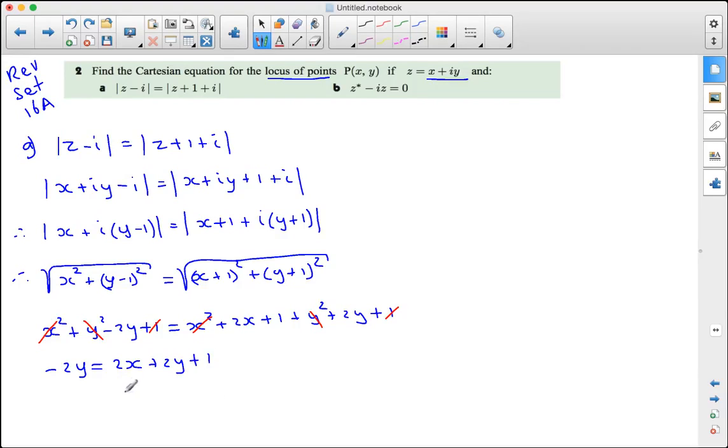Which says -2y equals 2x + 2y + 1. Rewrite this, bring everything to one side. It says 2x + 4y + 1 equals 0, or if you want, 2x + 4y equals -1, which is the equation of a straight line. So the locus is a straight line.